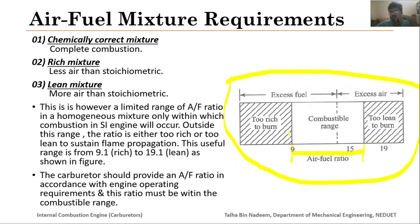If you go beyond this range — when the mixture is either too rich, we have less oxygen so improper combustion may occur, or the flame propagation may not propagate throughout the combustion chamber. Similarly, with too lean a mixture, too many air molecules will not allow the fuel to burn properly and the flame will not propagate through the whole combustion chamber.